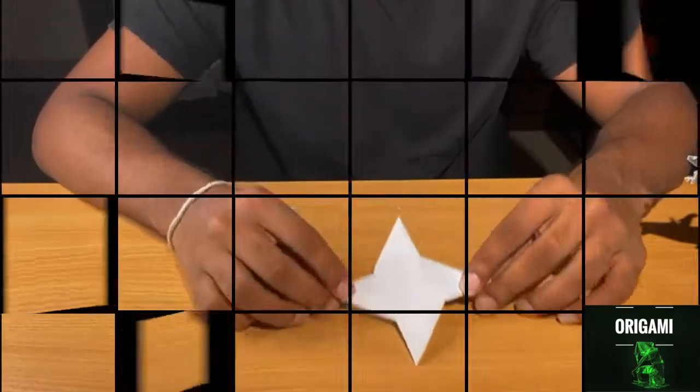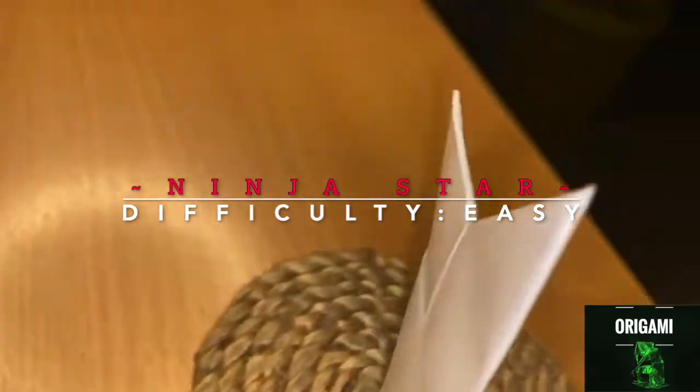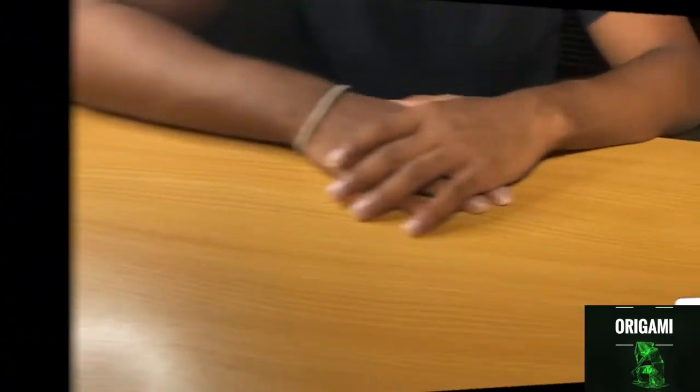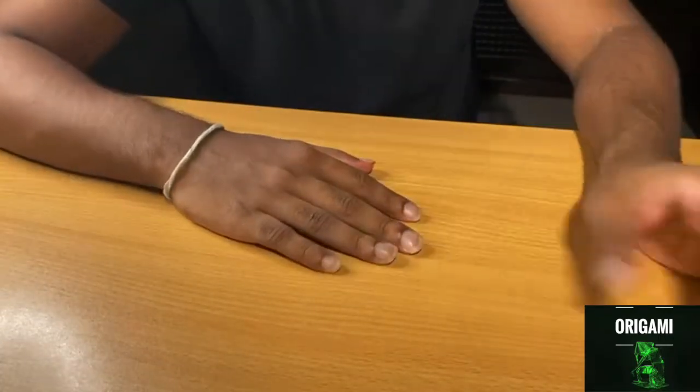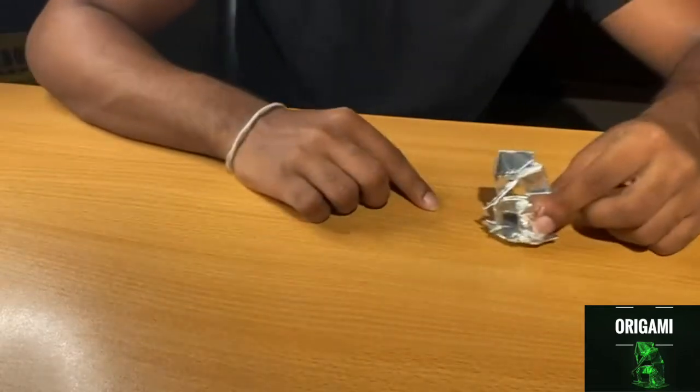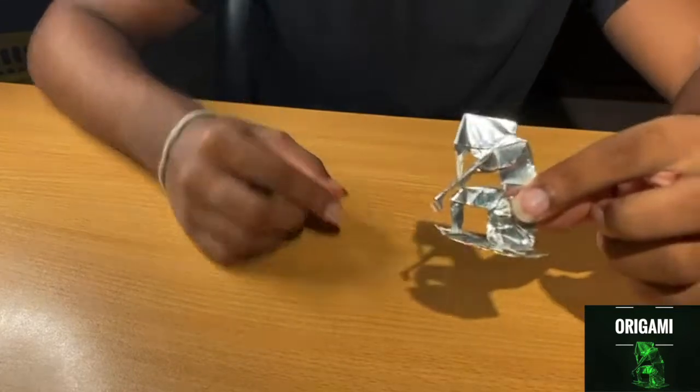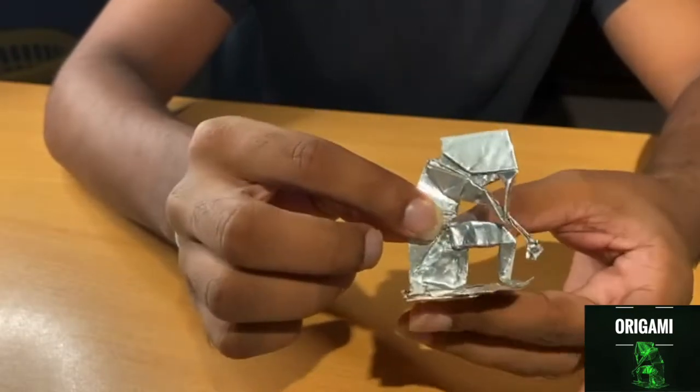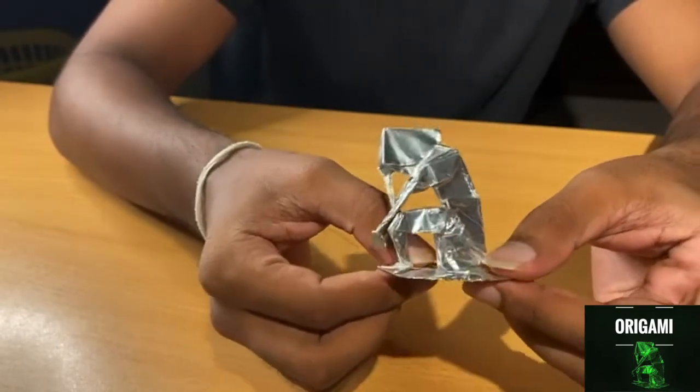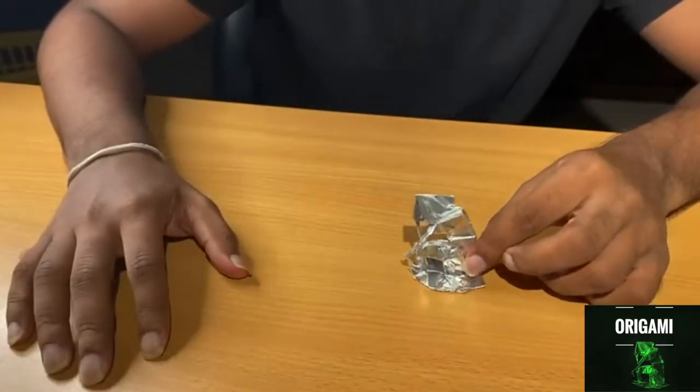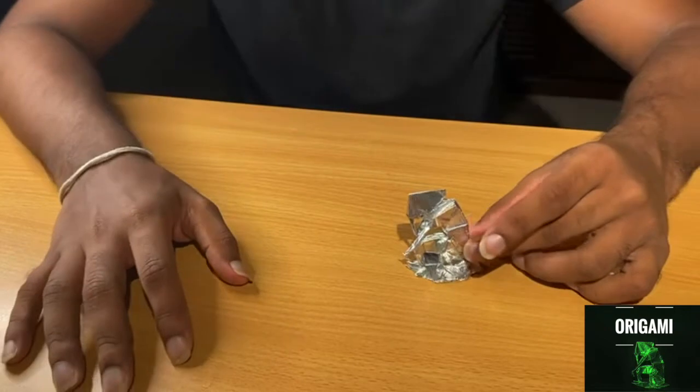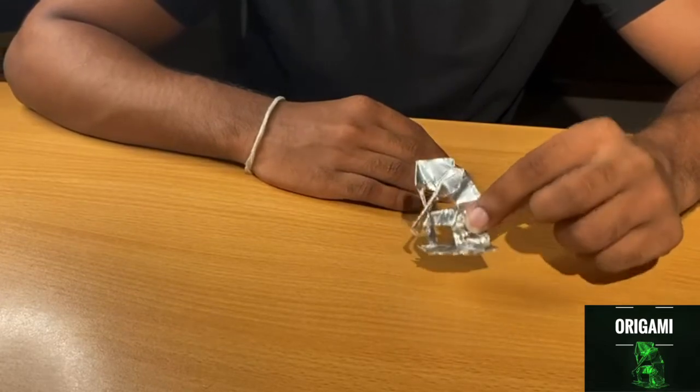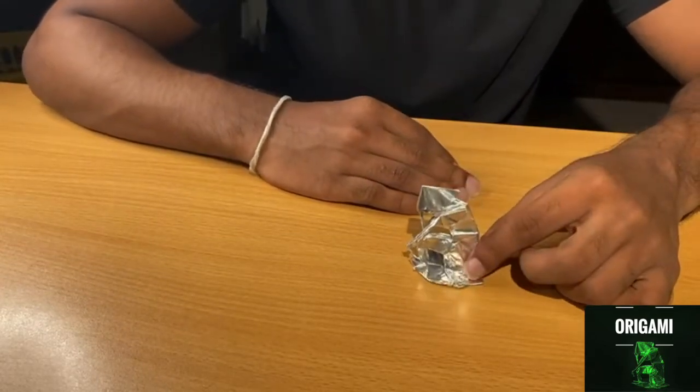Next we have an intermediate model. This is the origami thinker. As you can see it up closer, it can stand. It's an intermediate model and the paper I've used here is tissue foil. Paper that's thick like A4 is going to be more difficult for you guys to fold, so I suggest using softer paper like tissue foil.